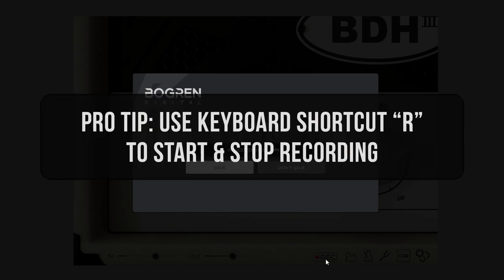As a shortcut, you can also perform the same action by pressing the R key on your keyboard. It acts exactly the same as pressing the record button — press it once to start recording and then again to stop recording.